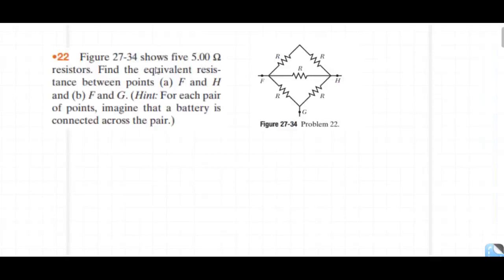Figure shows five 5 ohm resistors, all resistors are equal. R1 is equal to R2 is equal to R3 is equal to R4. Find the equivalent resistance between F and H, and F and G. For each pair of points, imagine that the battery is connected across the direction at a power point.